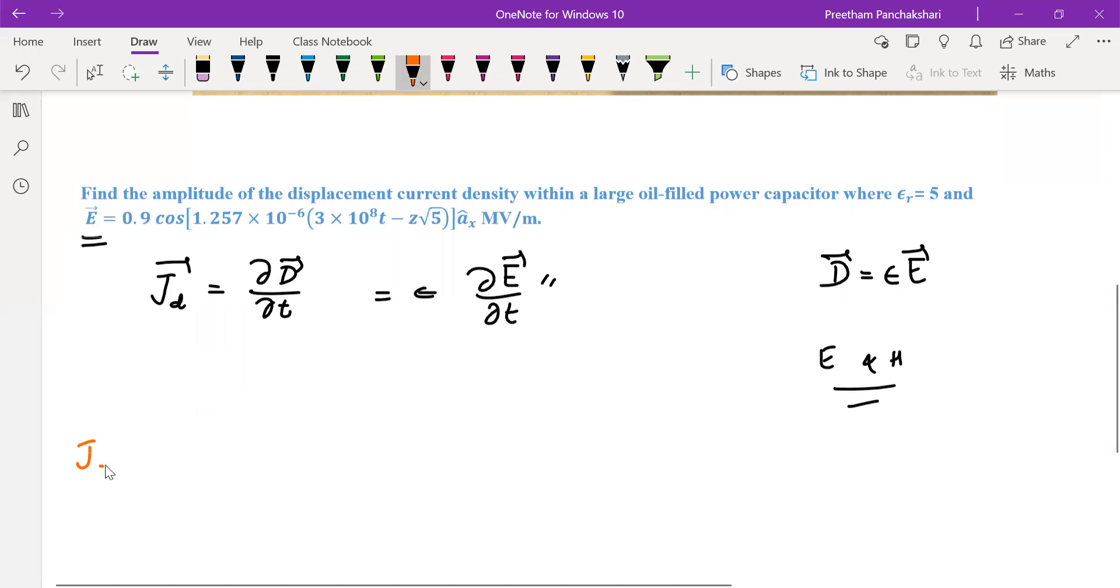So let us continue here. Jd is equal to ε₀εᵣ ∂/∂t of E. Let us copy the electric field here.